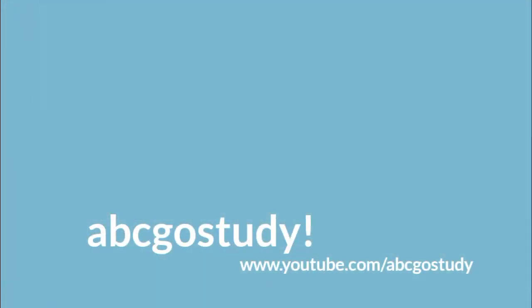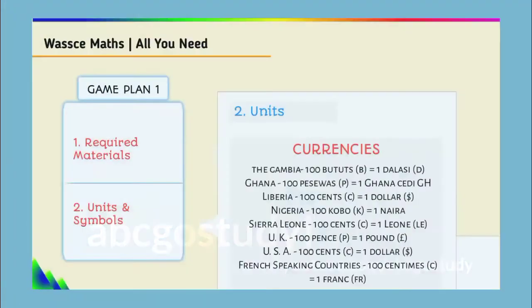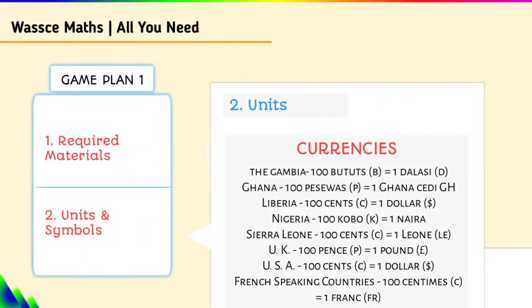Talking about currency, you should know the currencies for Gambia, Ghana, Libya, Nigeria, Sierra Leone, UK, and USA. You can see those listed on the screen.